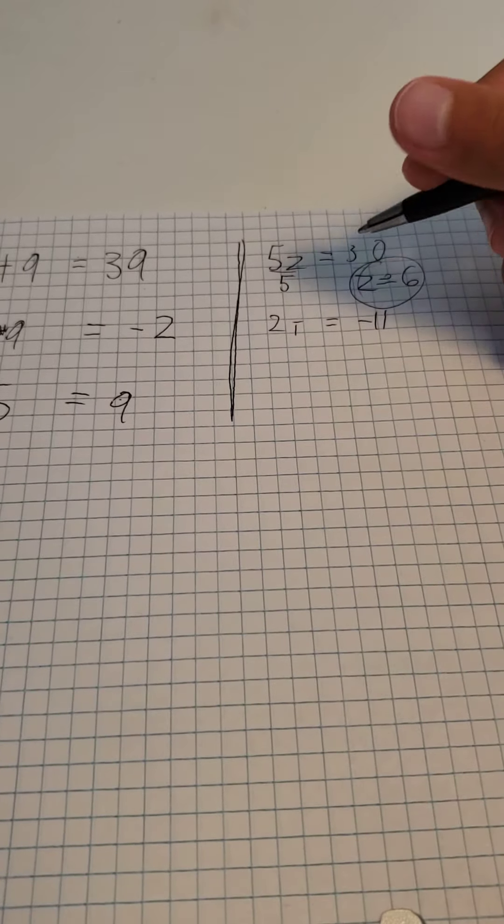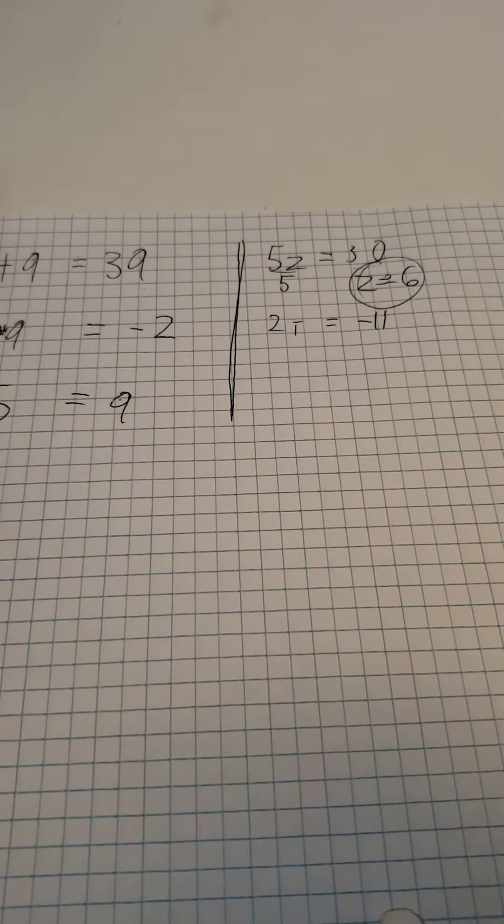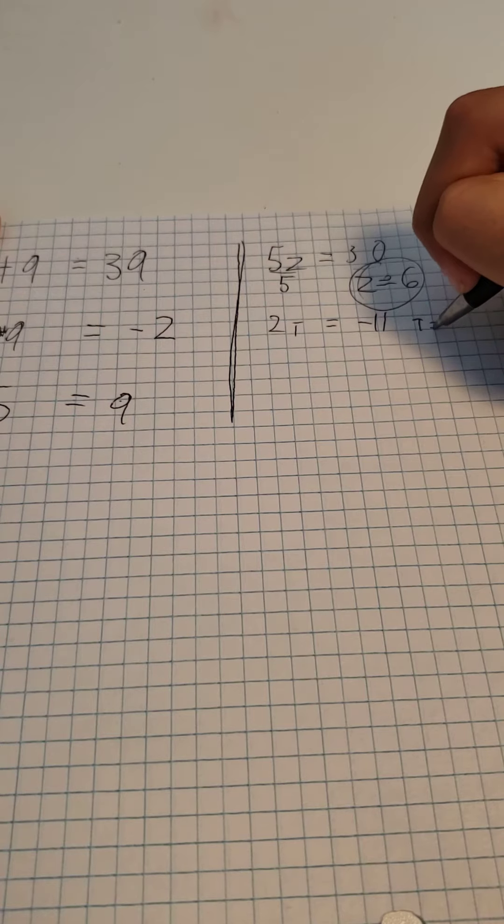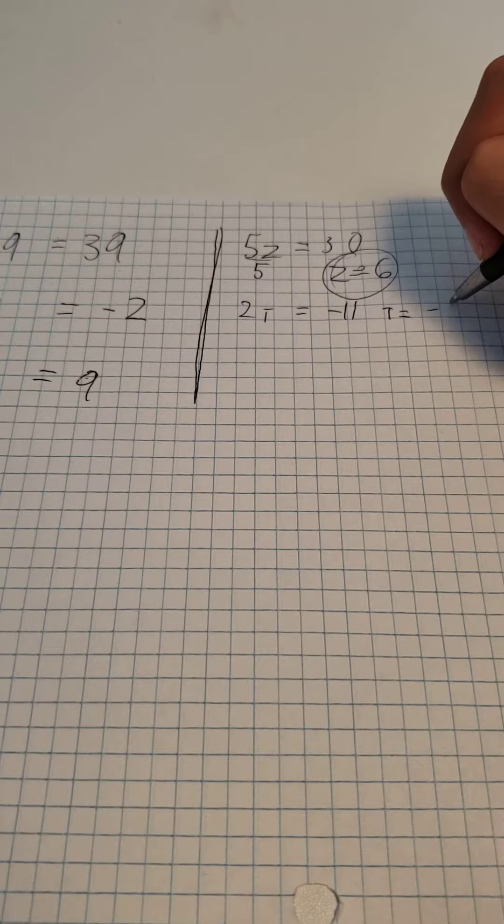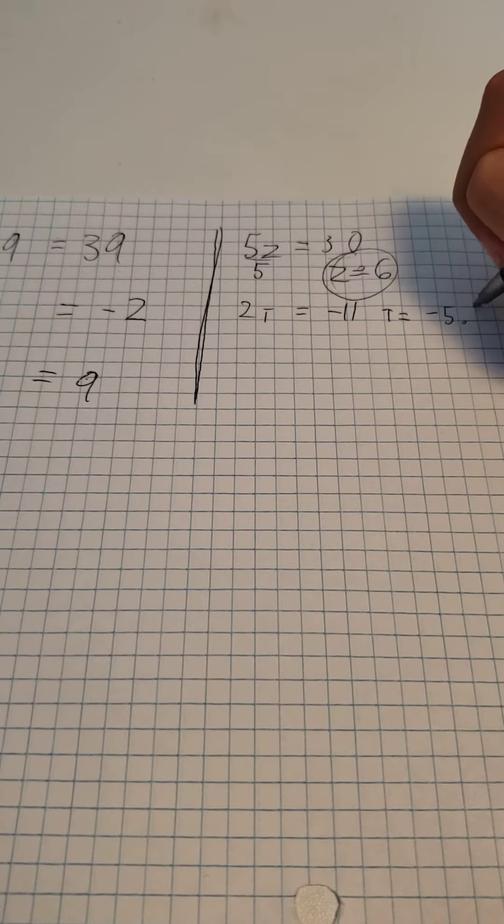Then you divide negative 11 by 2, and you get t equals negative 5.5.